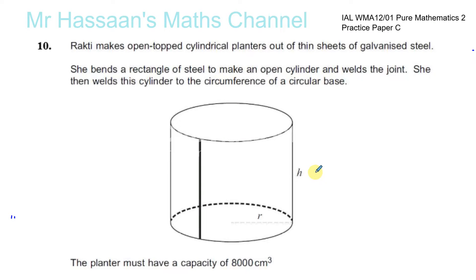Here we have question number 10 from P2, Practice Paper C. The last question on the paper is about applications of differentiation. Rakti makes open-topped cylindrical planters out of thin sheets of galvanized steel. She bends a rectangle of steel to make an open cylinder and welds the joint, then welds the cylinder to the circumference of a circular base.